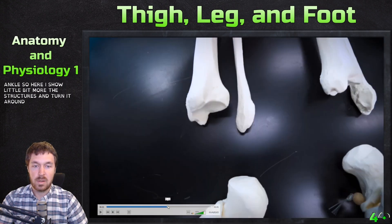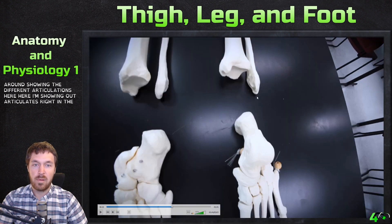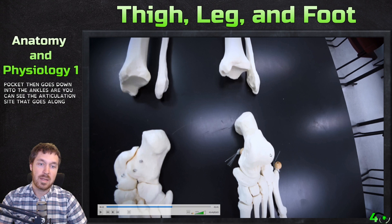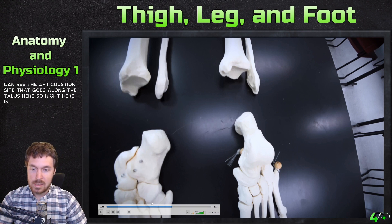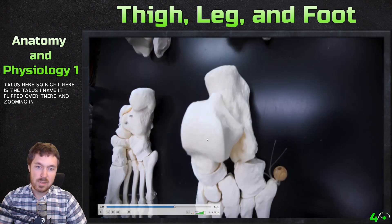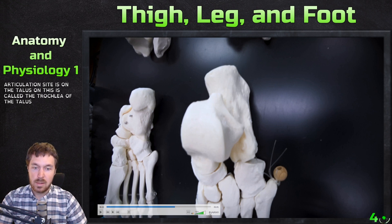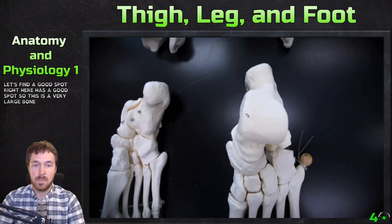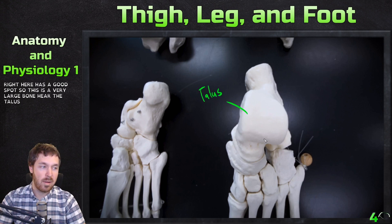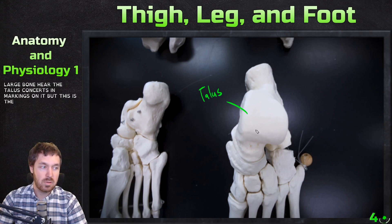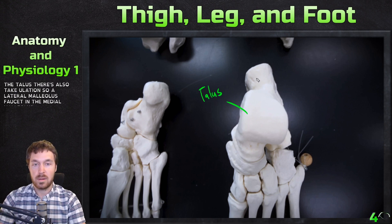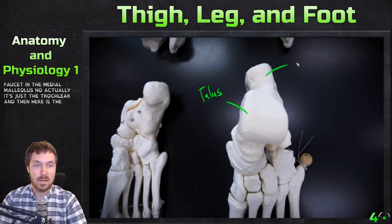Looking at the ankle, you can see the articulation where the tibia and fibula form a pocket that the talus fits into. The articulation site on the talus is called the trochlea of the talus. Here is the talus — a very large ankle bone — and below it is the calcaneus, your heel bone, which is a massive weight-bearing bone with an unusual shape.